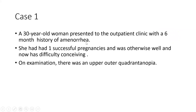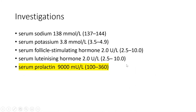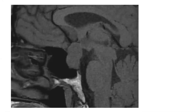Let's start with the cases. We have a 30-year-old woman who presented to the OPD with a six-month history of amenorrhea. She had one successful pregnancy in the past and is now having difficulty conceiving. On examination she has an upper outer quadrantopia. Investigations show prolactin around 9000 — elevated — while FSH, LH, and electrolytes are normal. This is the MRI image for this patient — first try to analyze it yourself. It is a T1-weighted image, as the CSF is black.